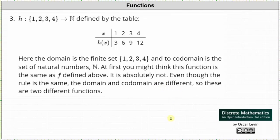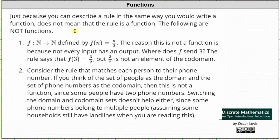Now let's look at some examples of rules or relations that are not functions. Just because we can write a rule in the same way we write a function does not mean it is a function. Here we have f that maps natural numbers to natural numbers defined by f of n equals n divided by two. This is not a function because not every input has an output — f of three equals three divided by two, which is not an element in the codomain, the set of natural numbers.